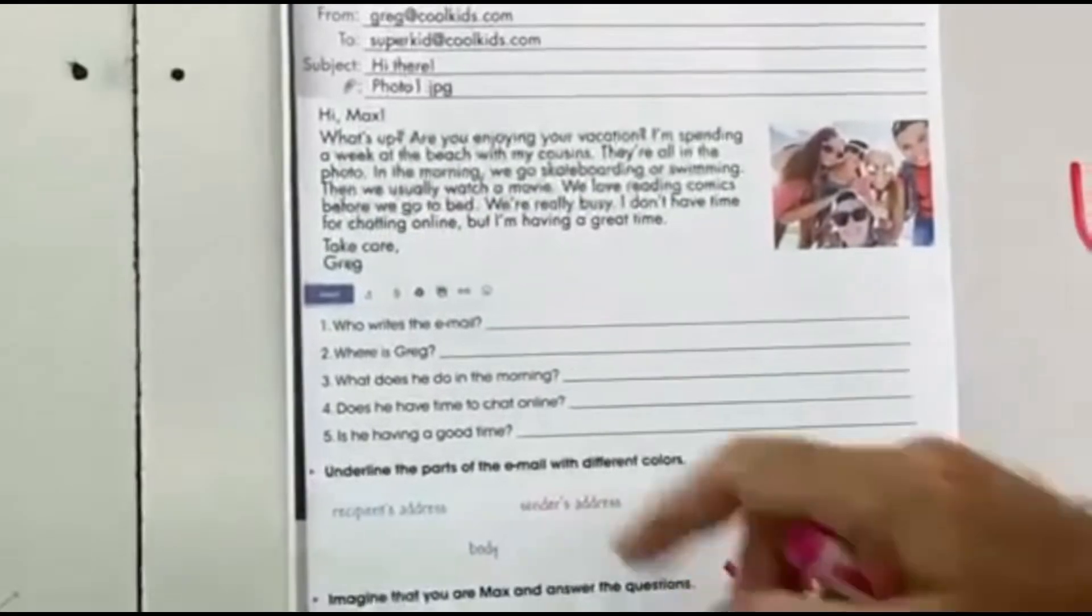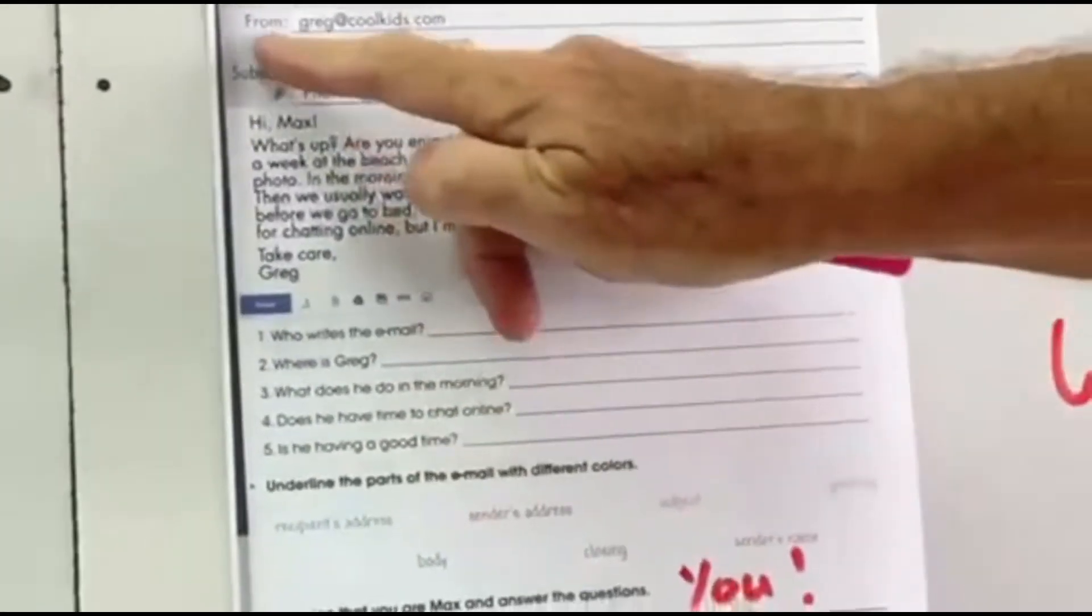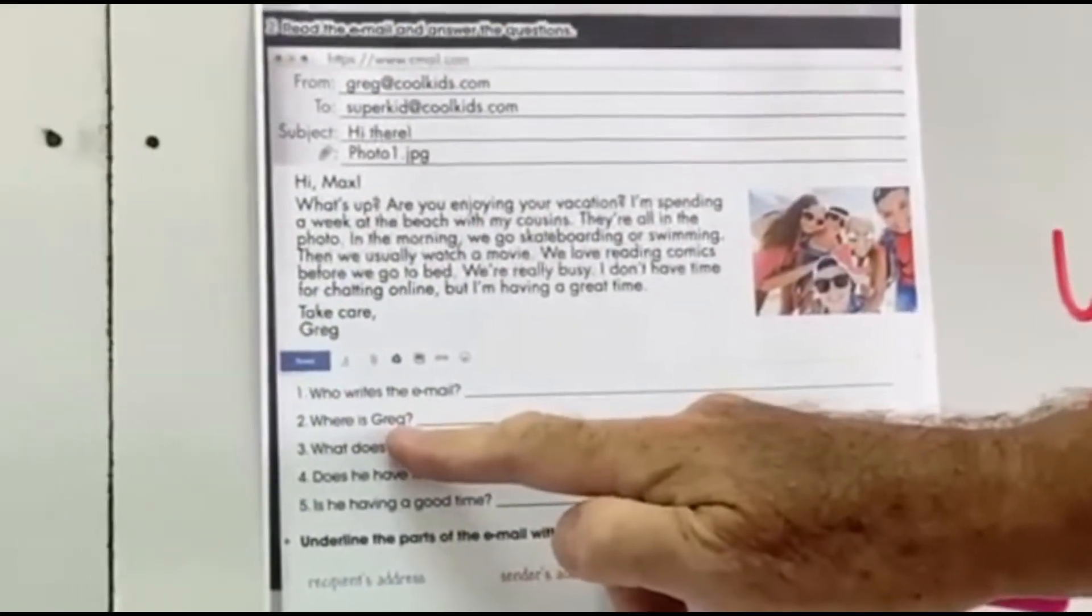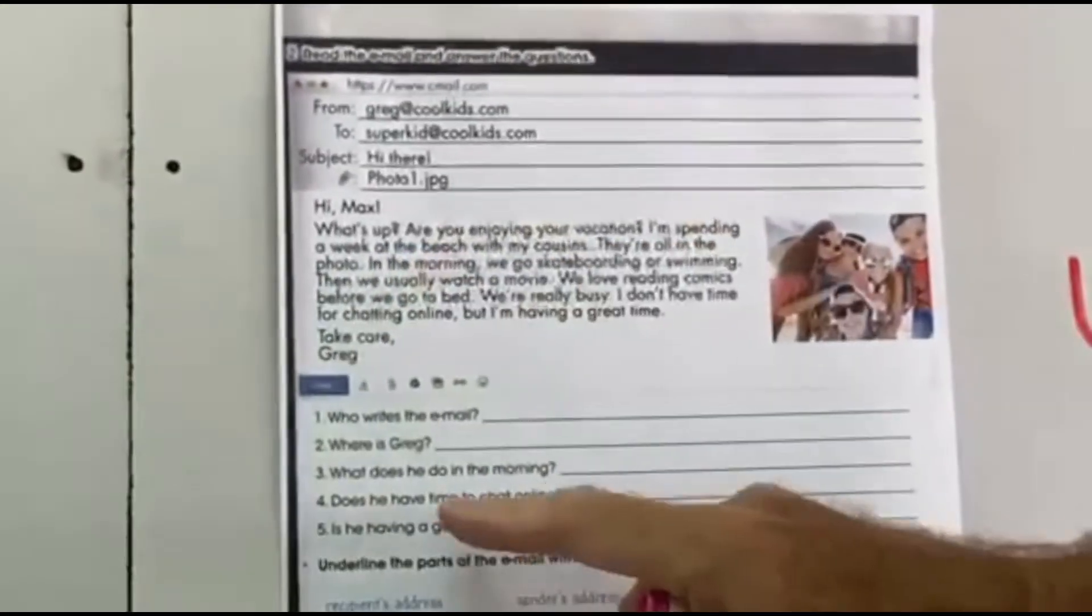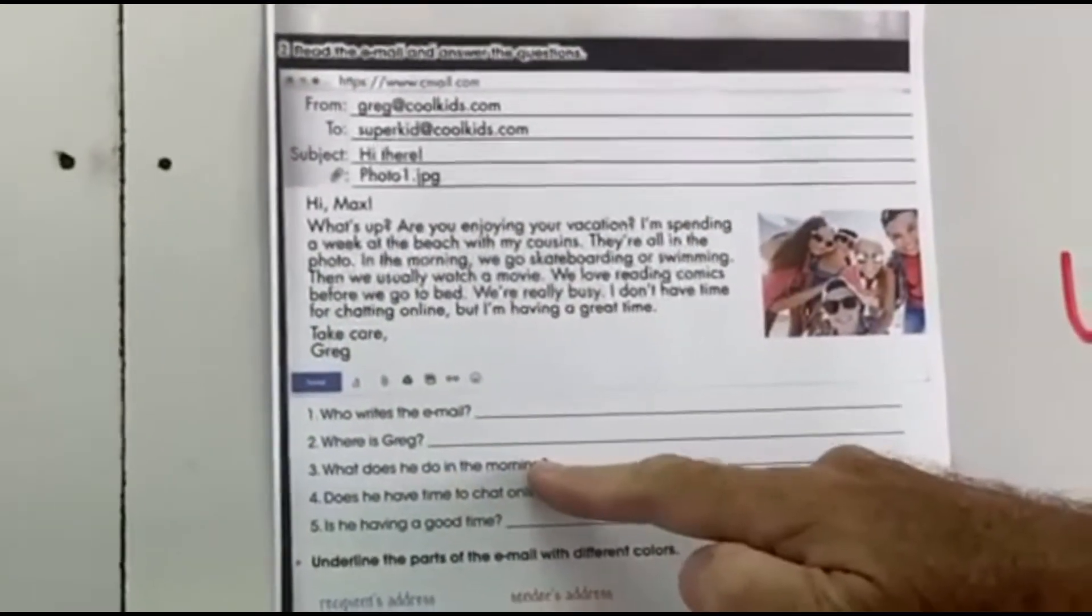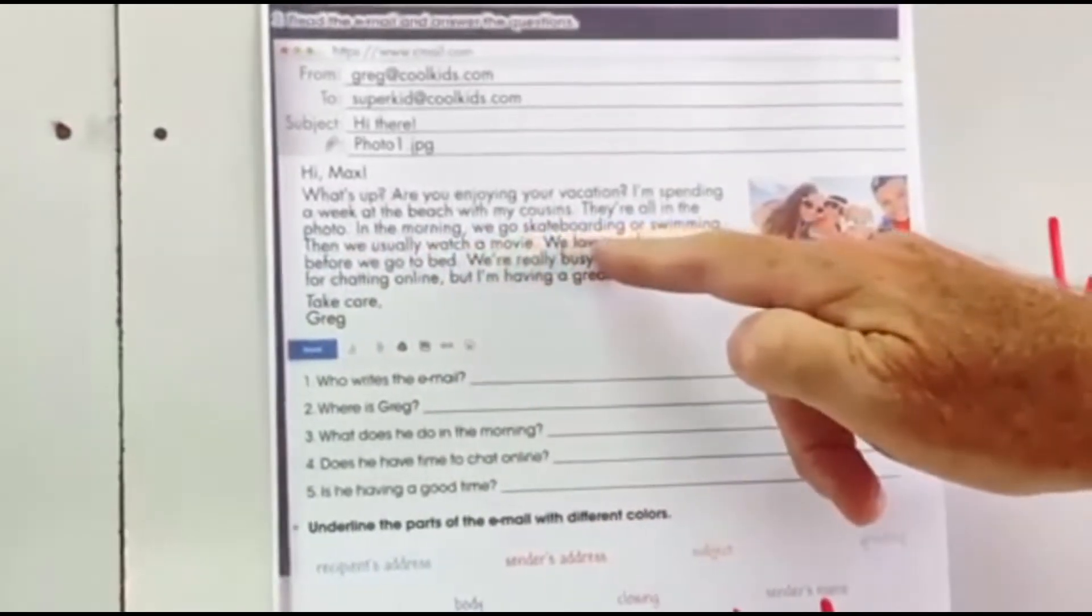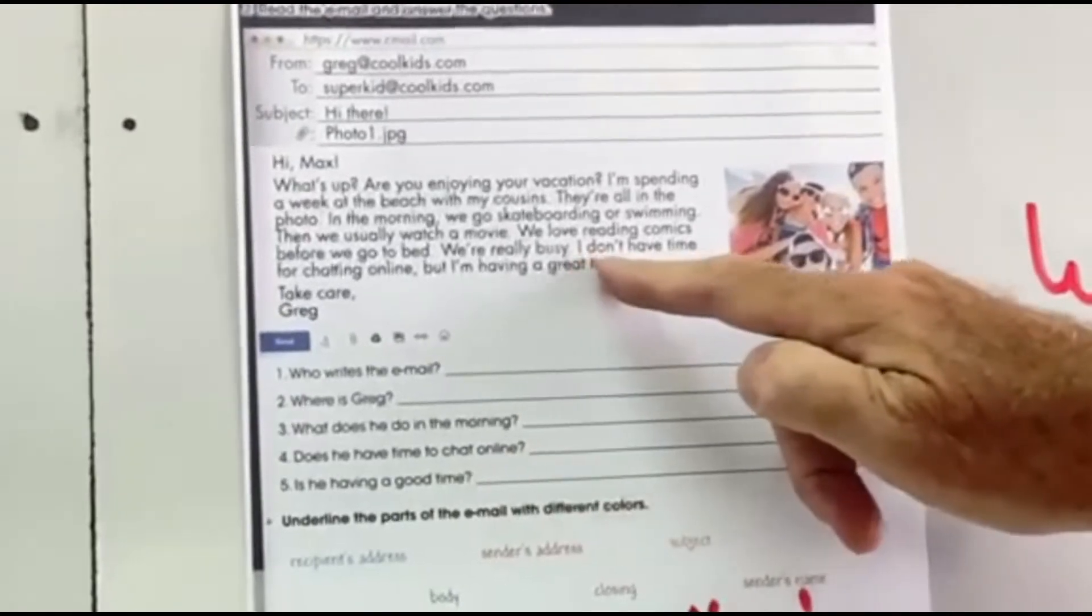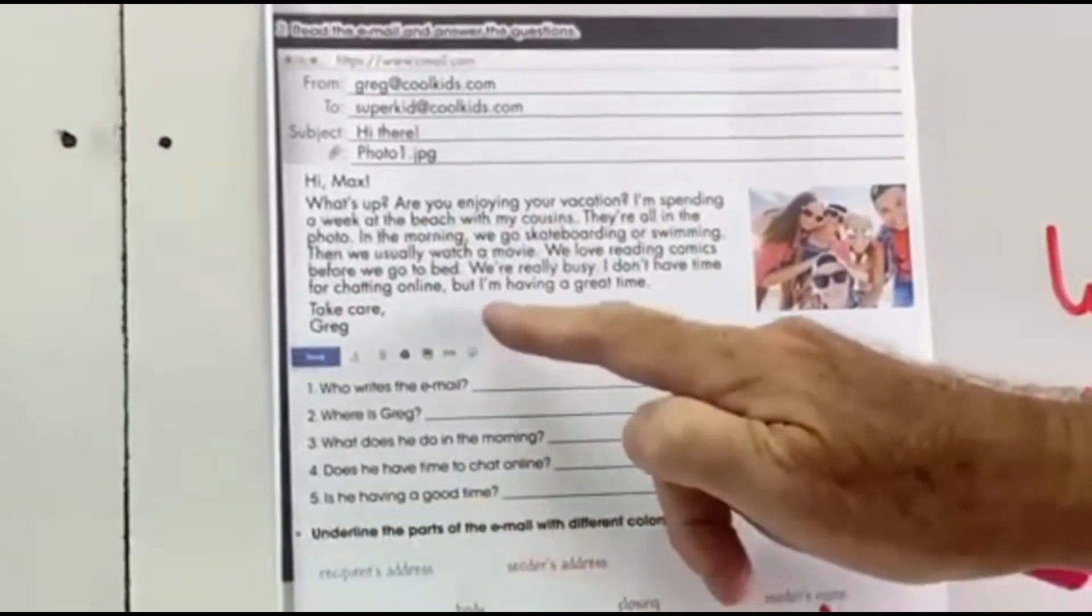So Greg is writing to Max. So let's look at the five questions here. Who is writing the email? It's from Greg, isn't it? Okay. Where is Greg? What does he do in the morning? Does he have time to chat online? Is he having a good time?